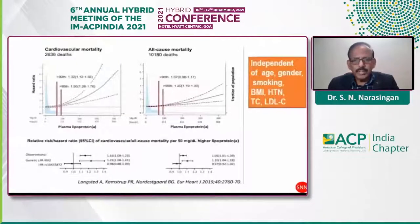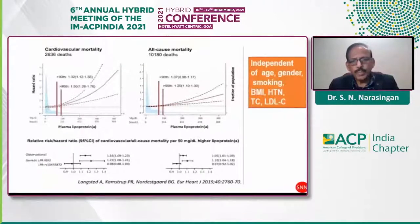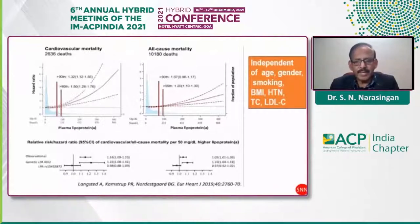Not only morbidity but also mortality is higher with elevated lipoprotein(a). Cardiovascular mortality from the 90th to the 95th percentile is very high in those with more lipoprotein(a). All-cause mortality is again elevated between the 90th and 95th percentile.